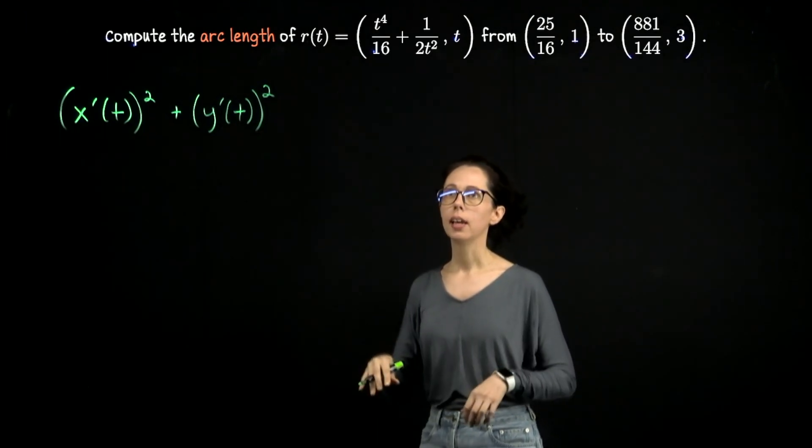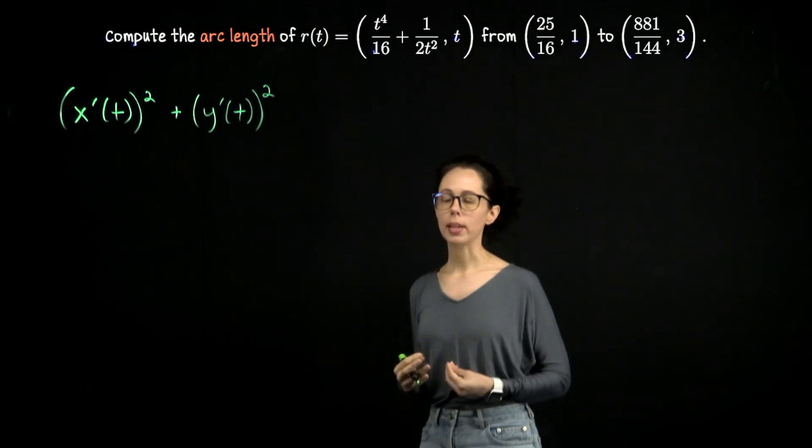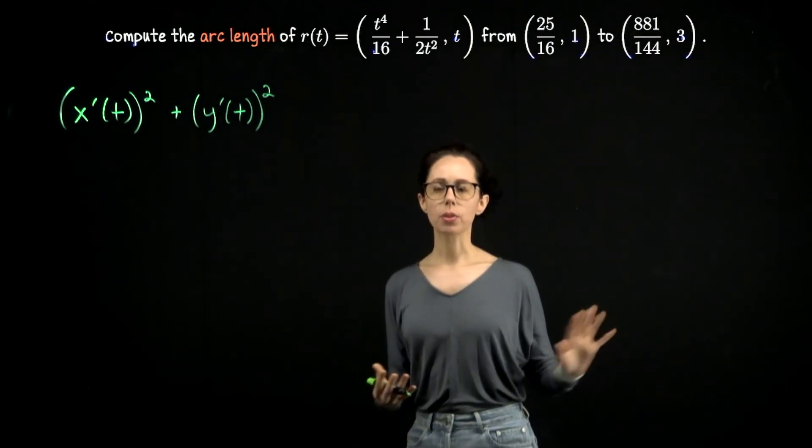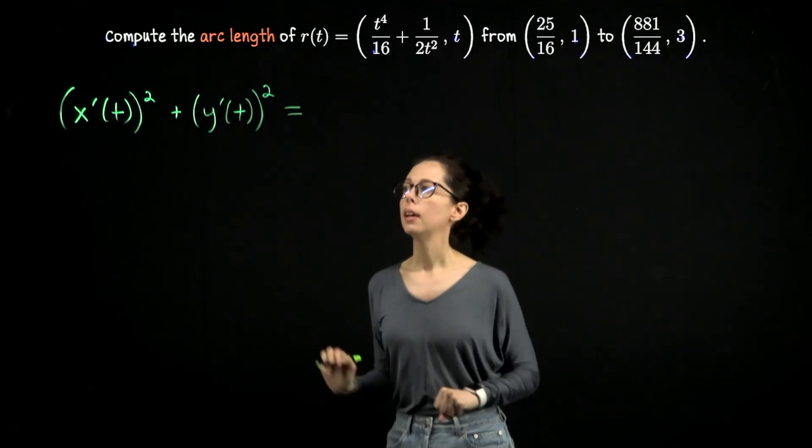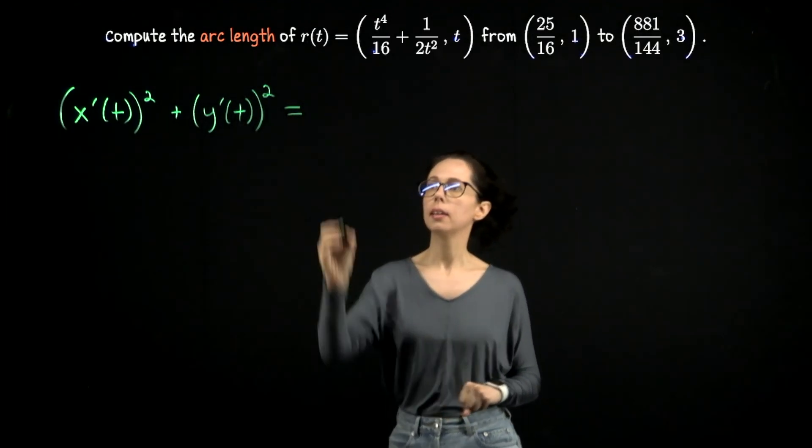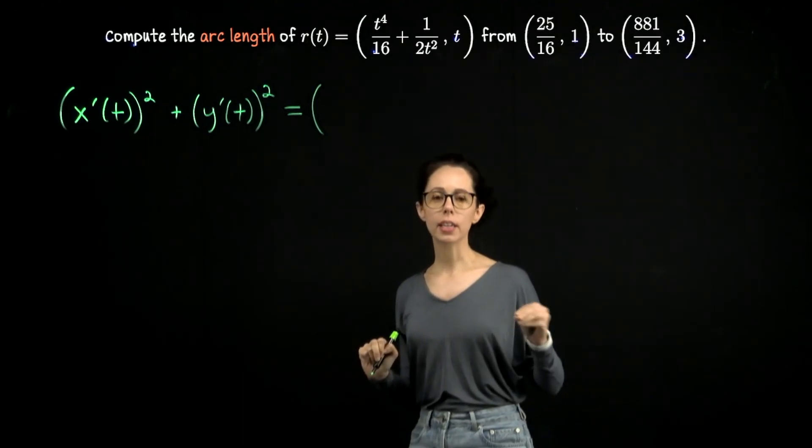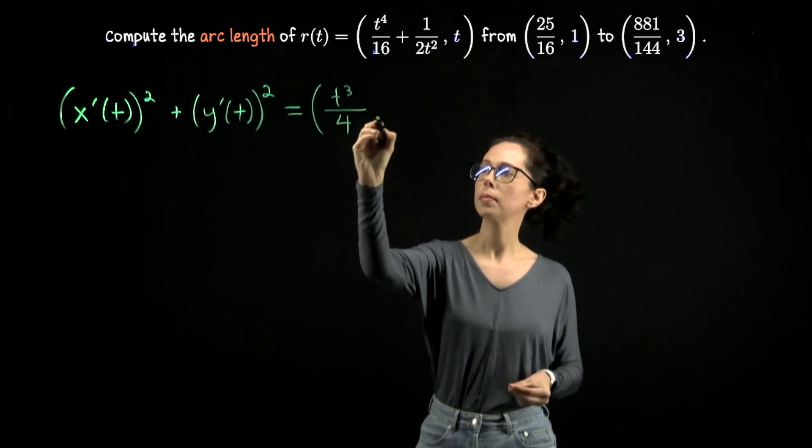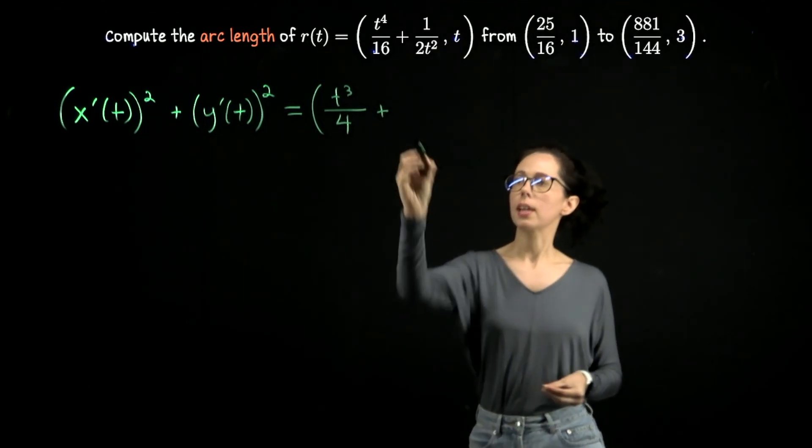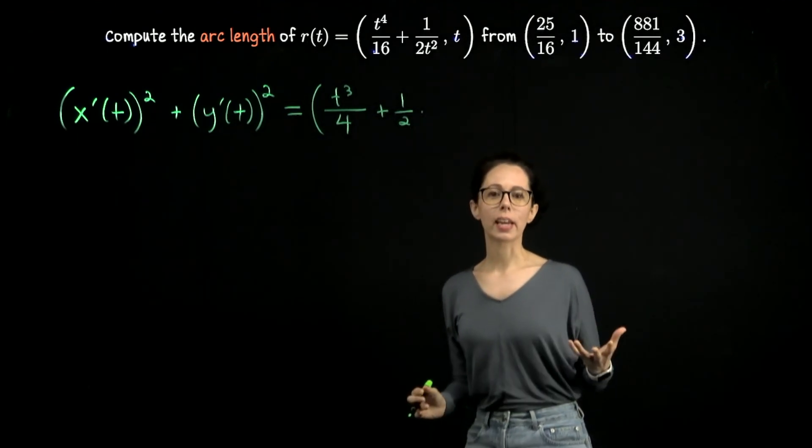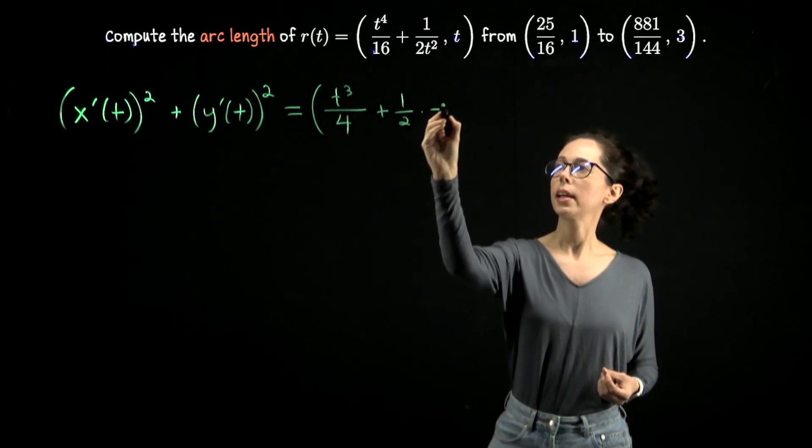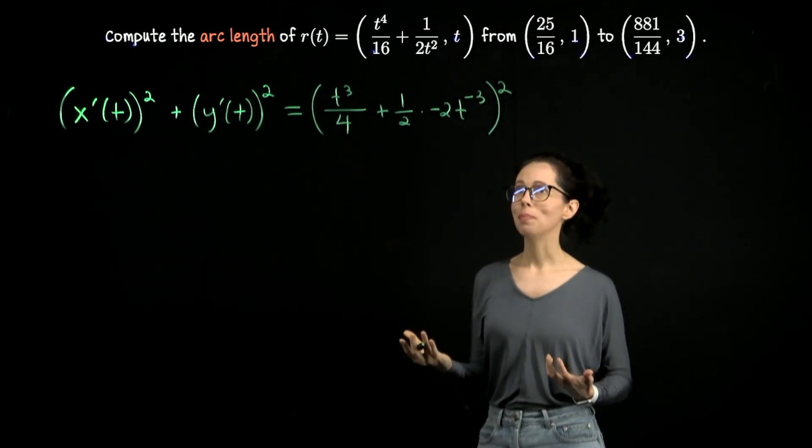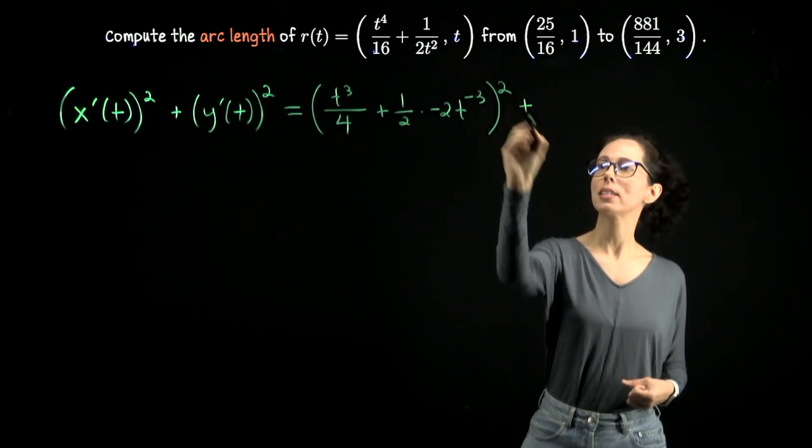So we'll have dx dt squared and add to that dy dt squared. Then we'll end up taking a square root and computing an integral, but let's set those aside for now. So dx dt is going to be 4t cubed over 16, which reduces to t cubed over 4. And then let me think of this as 1 half times t to the negative 2. So that's negative 2t to the negative 3. Square that. And then dy dt is just 1. So we will add to this 1 squared.